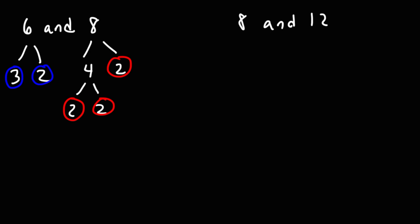Now, in order to find the least common multiple of 6 and 8, we need to combine the factors — not all of them, just the important ones. So 6 has one factor of 3, and 8 has no factors of 3. So we're going to pick the higher of the two, which is one factor of 3.